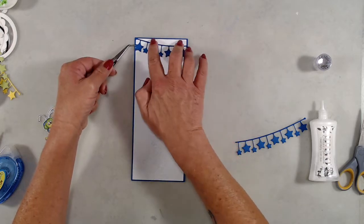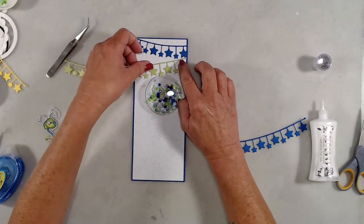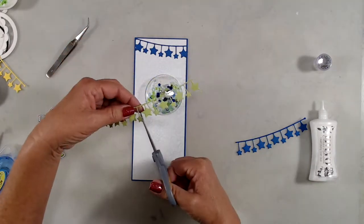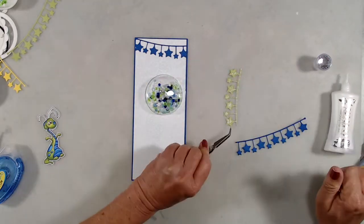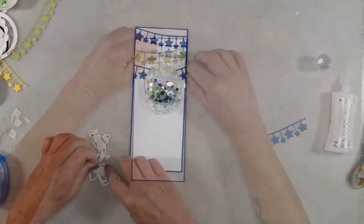After I had my bubble adhered in place, I adhered my stamped background to the front of that blue cardstock. I had die cut the star banners from blue and green cardstock, and I trimmed them down to fit the width of my card and used liquid glue just to adhere those in place.